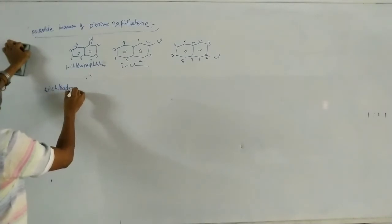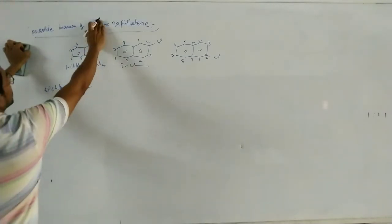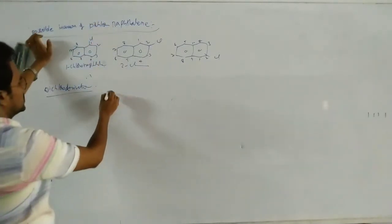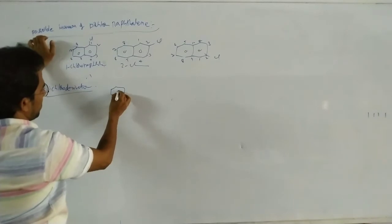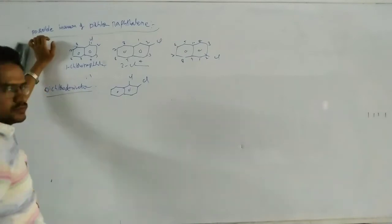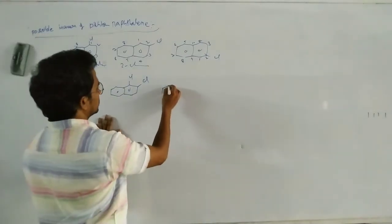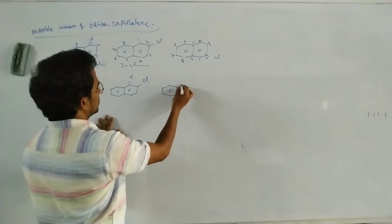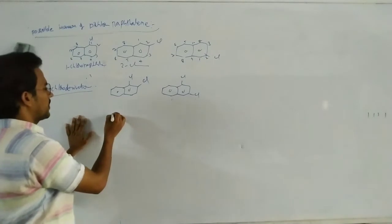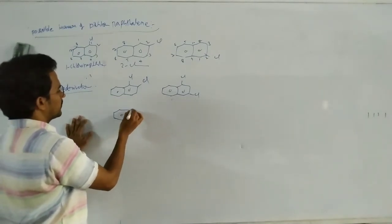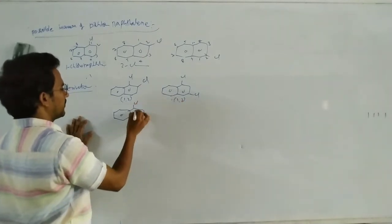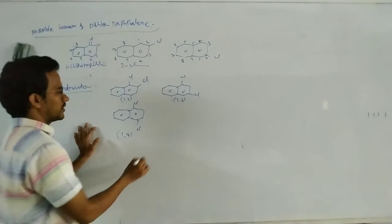Now dichloro derivatives of naphthalene. First: 1,2-dichloro. Next: 1,3-dichloro. Then: 1,4-dichloro.